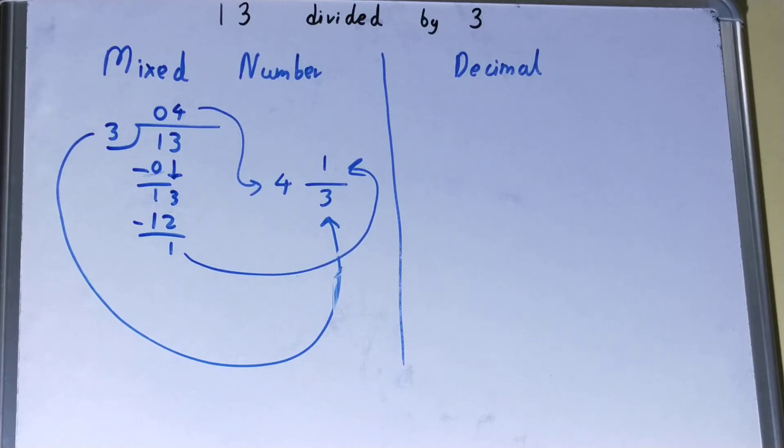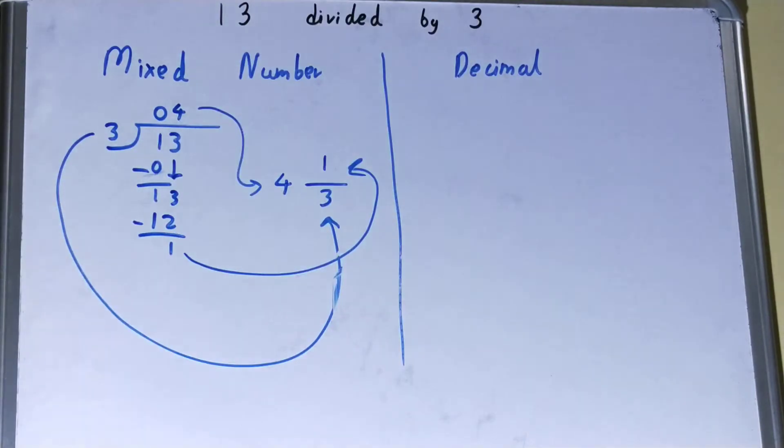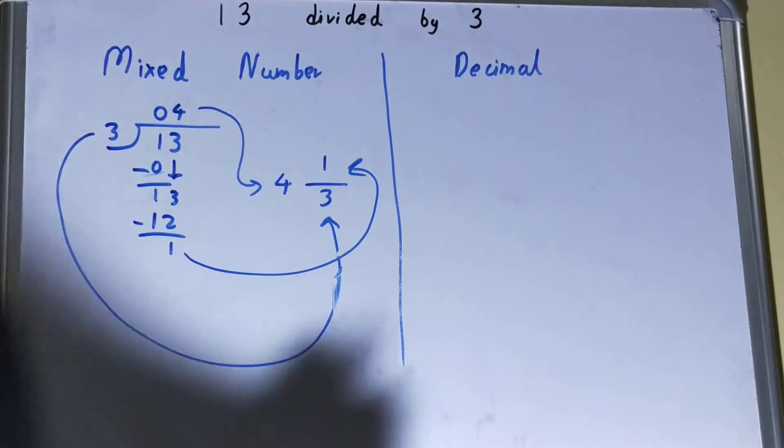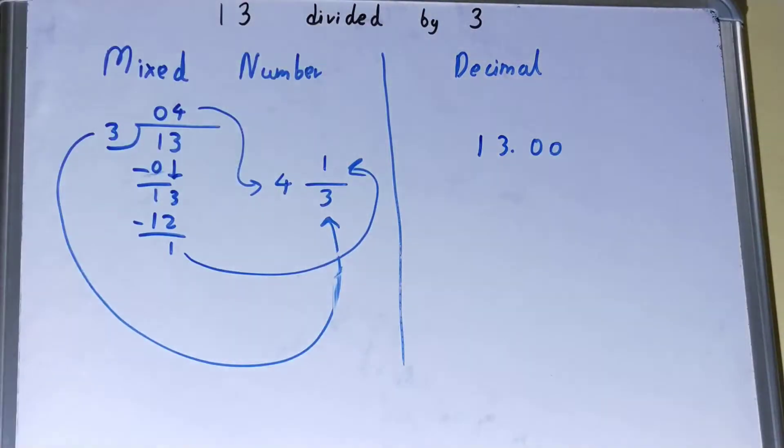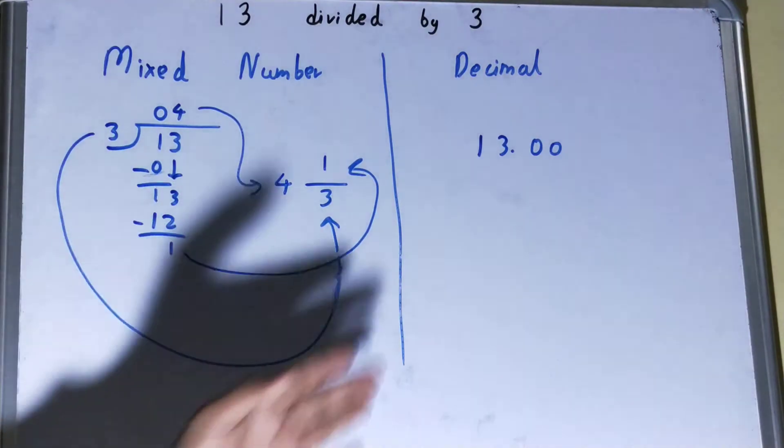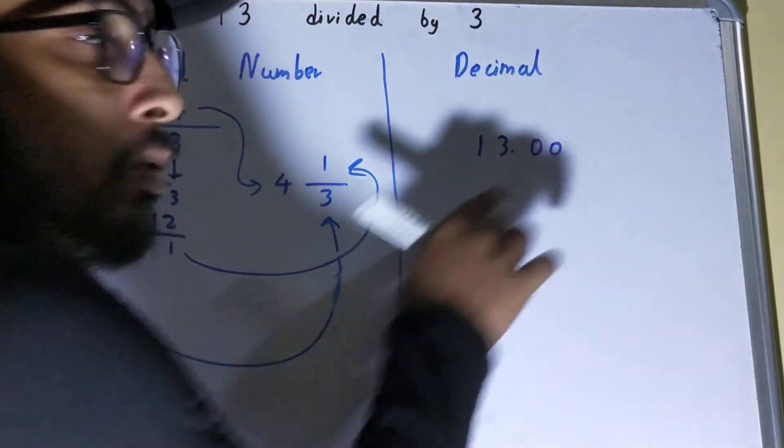Now let's move on to the decimal. If you are asked to find 13 divided by 3 in decimal form, first consider till what decimal places they are asking. Let's say they are asking till two decimal places. If they haven't specified, generally you need to find two decimal places, so you need to put two zeros.